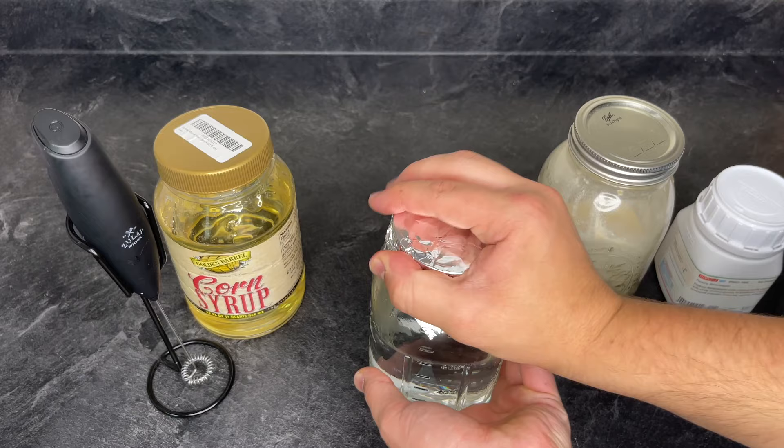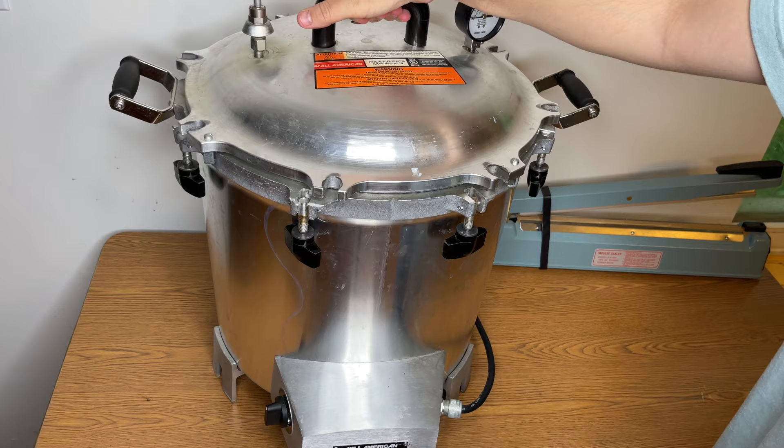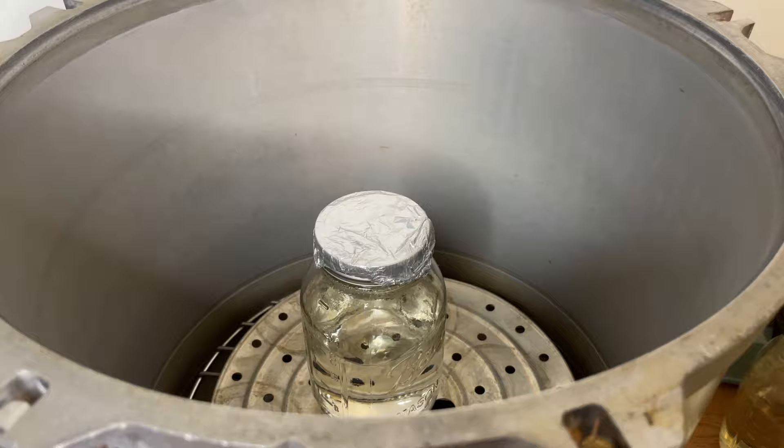I loosen the lid a quarter turn and cover with aluminum foil. The jar is then sterilized in a pressure cooker for 20 to 30 minutes at 15 psi. If you don't have a sterilizer, you can give the jar a steam bath for 2 hours in a large pot with a lid.